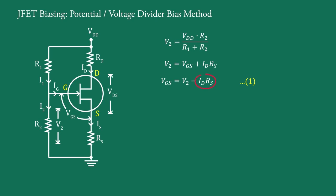The current IDRS is so designed that IDRS is greater than V2 so that VGS is negative and this provides correct bias voltage.